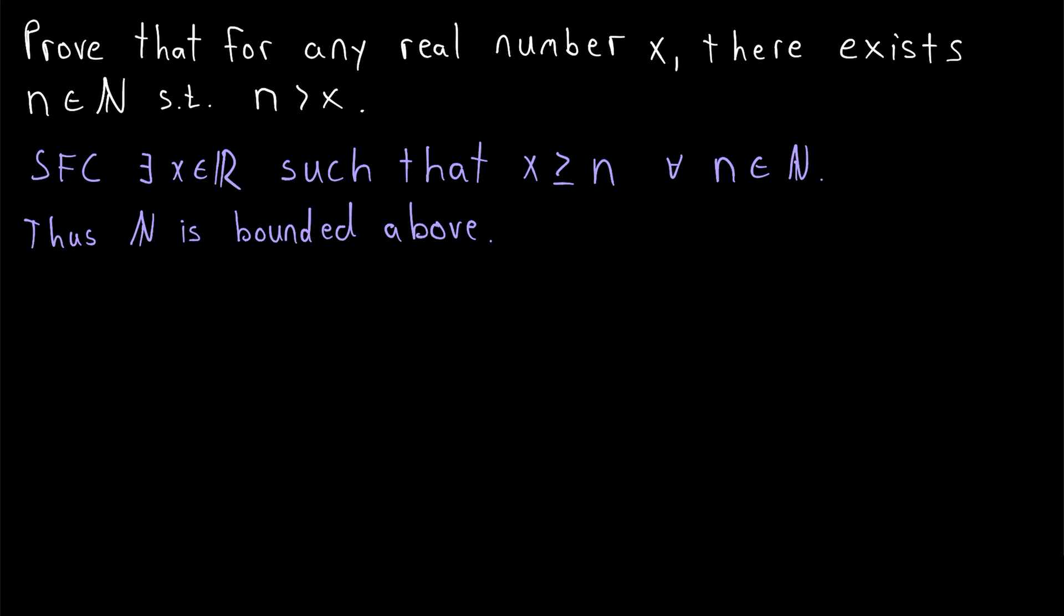Also, we, of course, know that the set of natural numbers is non-empty. Thus, by the completeness of the reals, often called the least upper bound property, since the natural numbers is a non-empty subset of the real numbers that's bounded above, we can conclude that it has a supremum. The supremum of the natural numbers exists. Let's say it's equal to S.